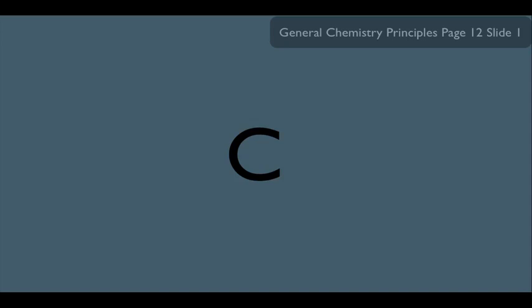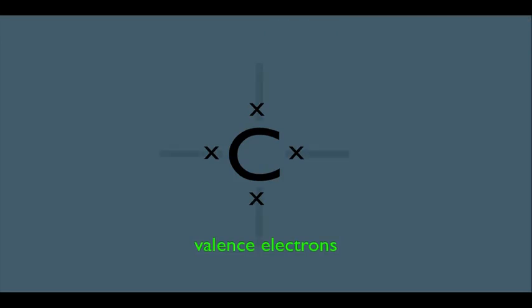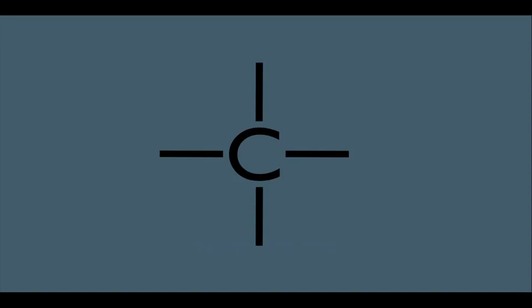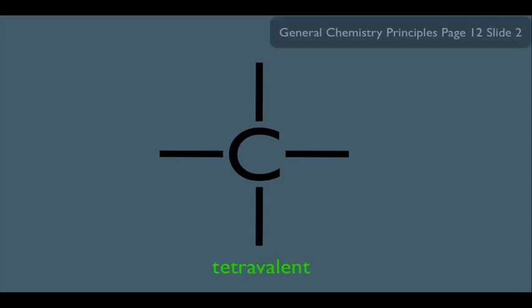Let's start with carbon. Remember, on the periodic table of elements, carbon is in column 4, which means it has four valence electrons. Valence electrons are electrons that happen to be in the outermost shell of the atom, and it's these outermost electrons that contribute to bonding. Carbon has the ability to share electrons with each one of its valence electrons, giving it the possibility to make four bonds. This causes it to be tetravalent.